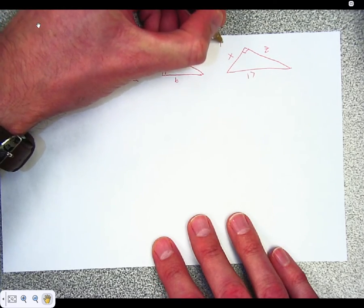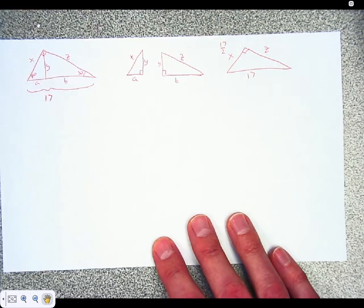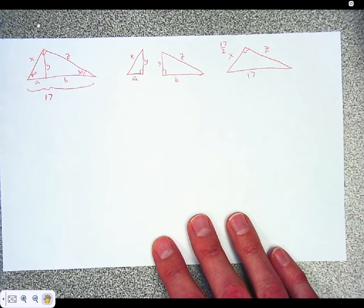Before you grab your calculator and do 17 divided by 2, they're going to leave it as a fraction. 17 over 2, which is the same thing, 17 divided by 2. They're going to leave it as that fraction though.